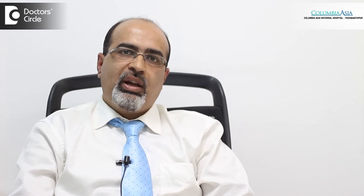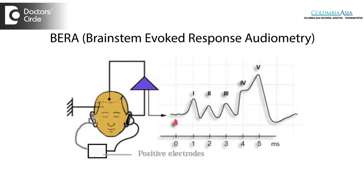There are also tests like Brainstem Evoked Response Audiometry, which is an objective test. In this test, we connect the patient to a computer, give a stimulus to the ear in the form of a noise, and trace the pathway of the entire auditory path on the computer. It is similar to an EEG, but here the activity is charted in the auditory pathway. This is commonly used when patients are unable to respond or are too young to cooperate. This test is called BERA.